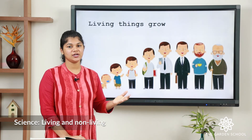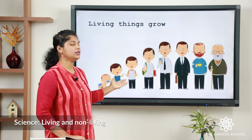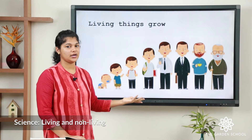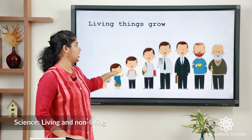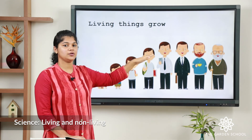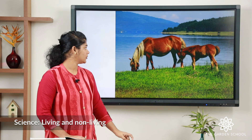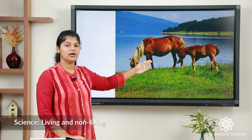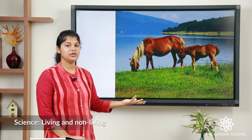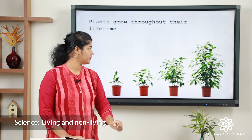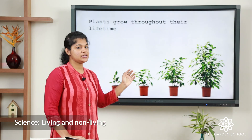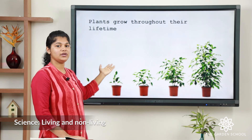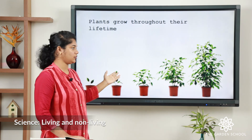The next characteristic of a living thing is that living things grow. For example, we humans are born as an infant and we grow to a certain level and then growth stops. You can see the horse and the pony — it is first born as a pony and it becomes a horse. Plants also always grow throughout their life.